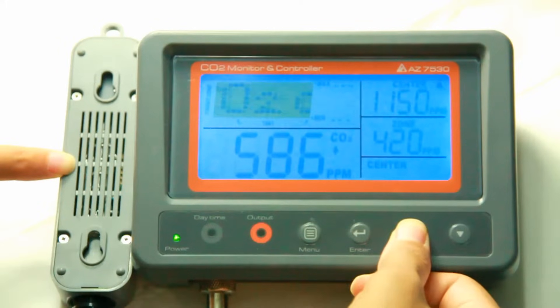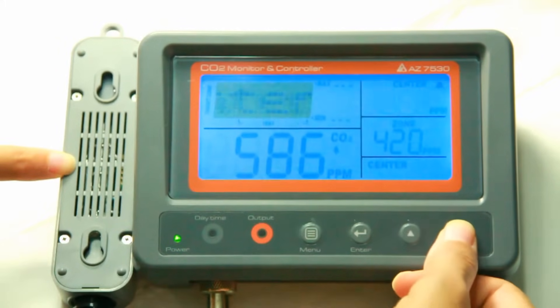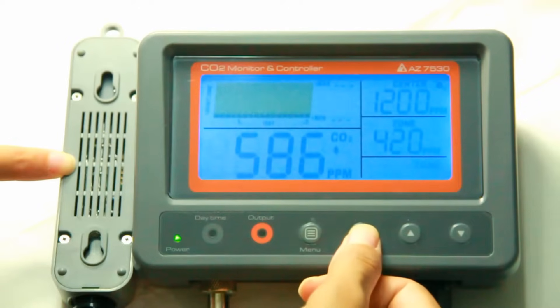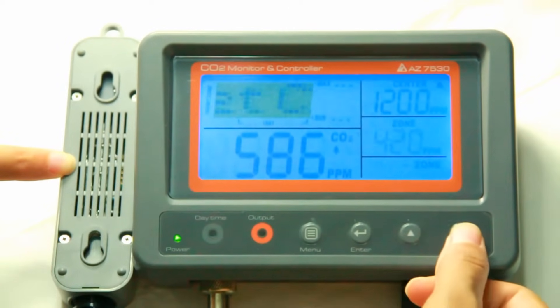Using menu, up, down and confirm keys to adjust the center and zone value to 1,200 and 400 ppm.